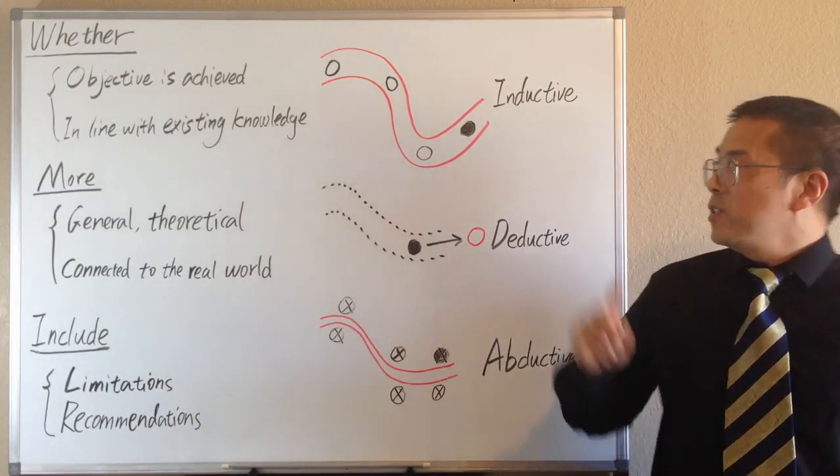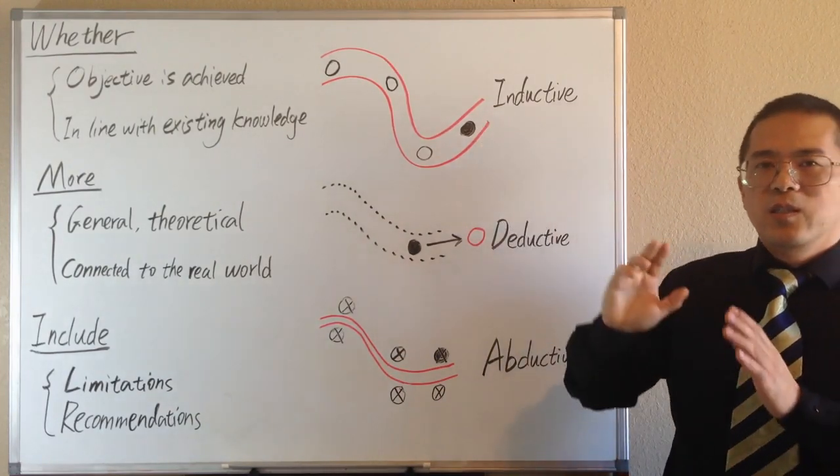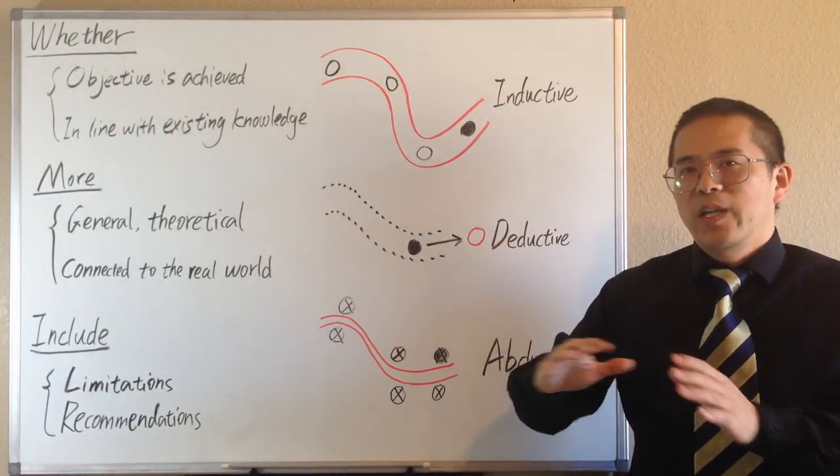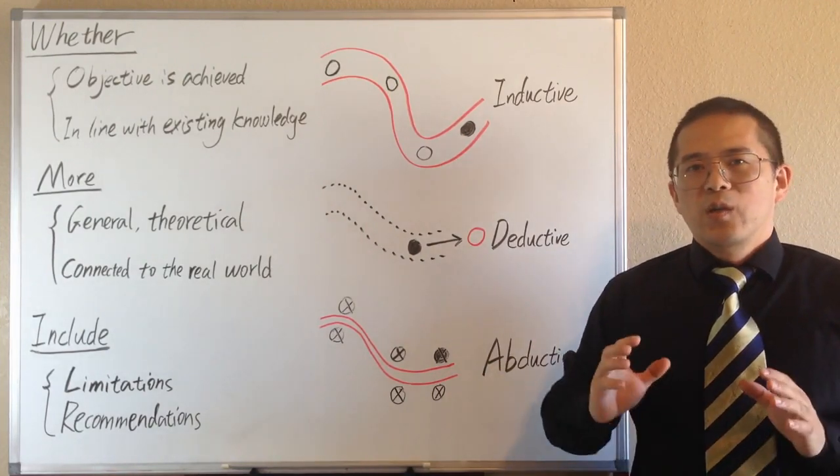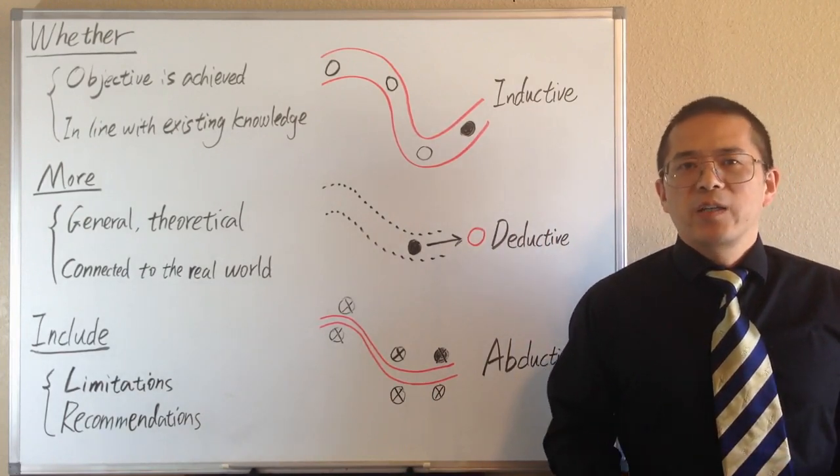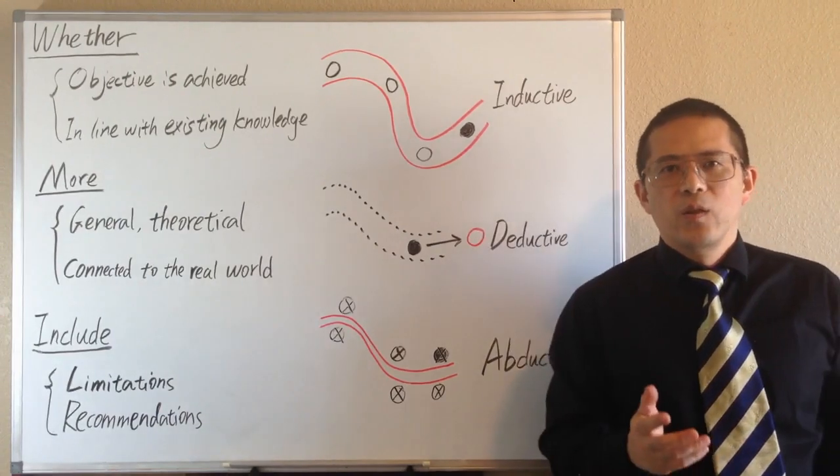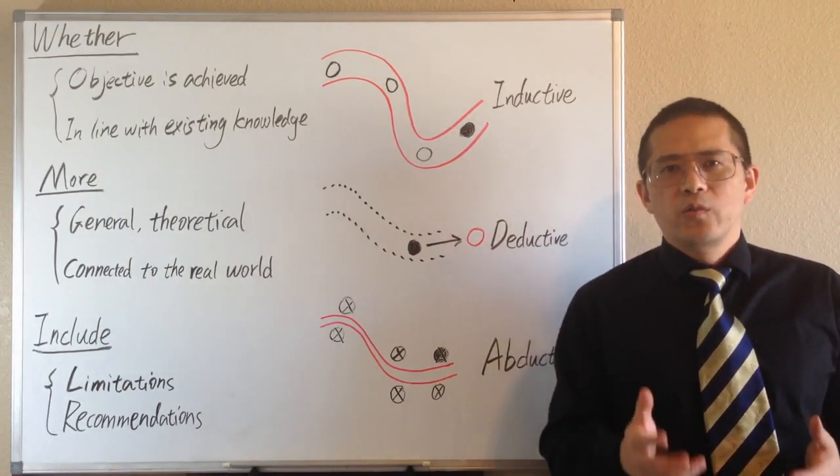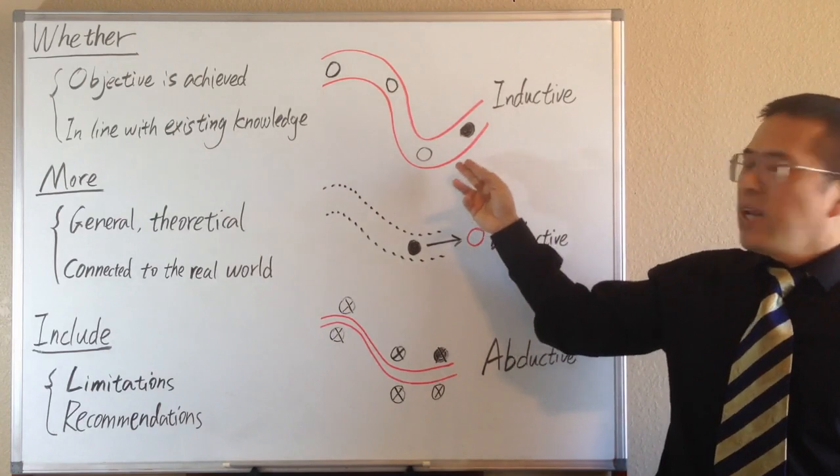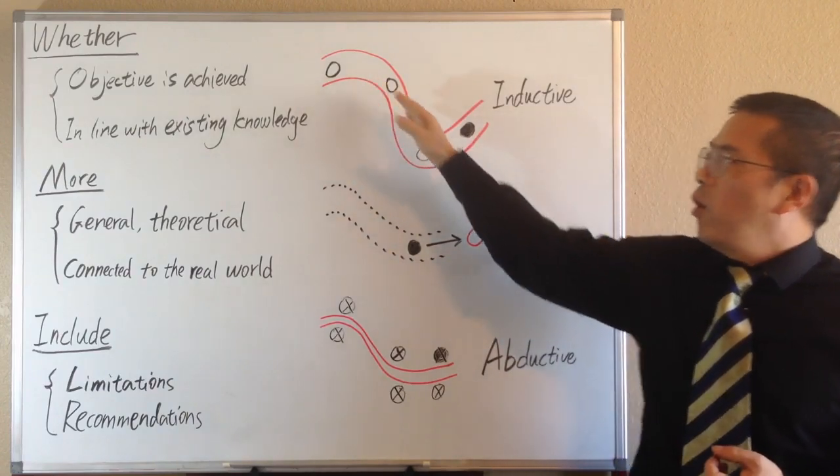The first method is inductive reasoning. The black dot here represents the results of the current study. The circles here represent related results in the literature. When we put them together, through inductive reasoning, we may be able to identify trends, rules, or patterns in these studies. We may be able to contribute to a new theory, or to complete an existing theory. The red line here represents the new rule or theory that can be concluded from all the evidence.